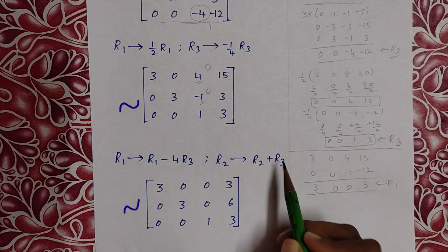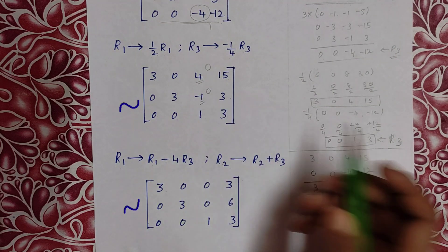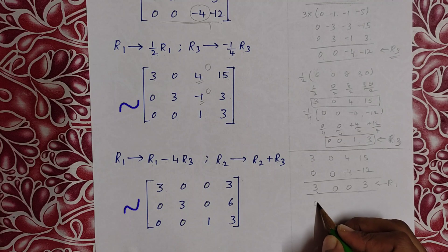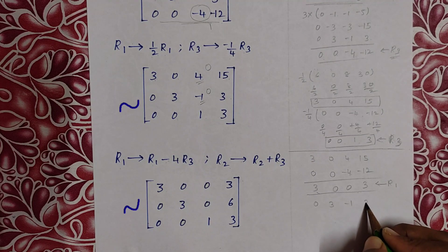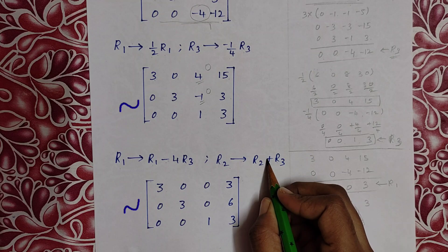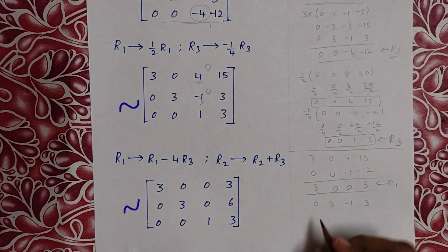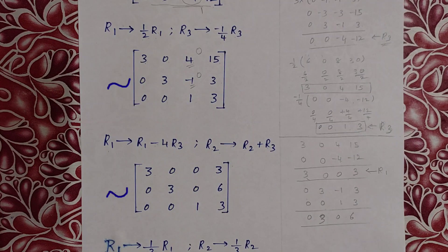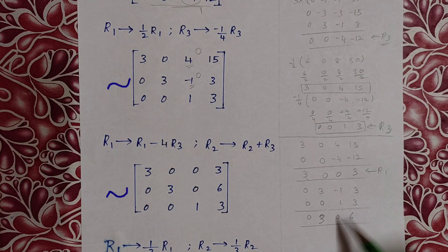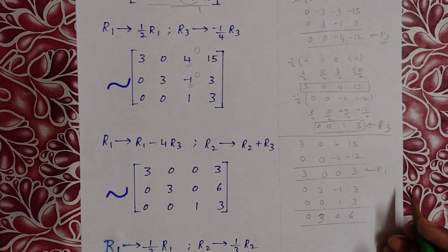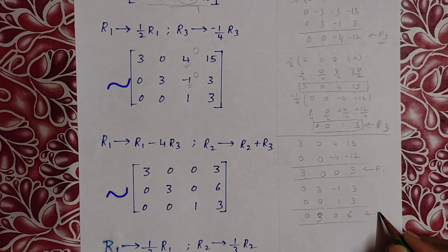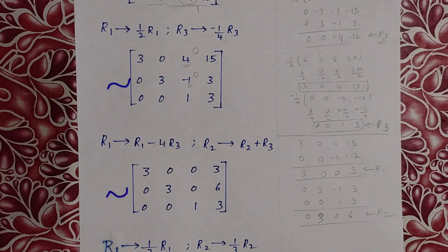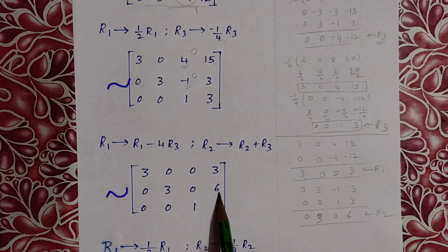R1 turns to R1 minus 4R3: [3, 0, 4 | 15] minus 4×[0, 0, 1 | 3] = [3, 0, 0 | 3]. R2 turns to R2 plus R3: [0, 3, -1 | 3] plus [0, 0, 1 | 3] gives 0+0=0, 3+0=3, -1+1=0, 3+3=6. So R2 becomes [0, 3, 0 | 6].